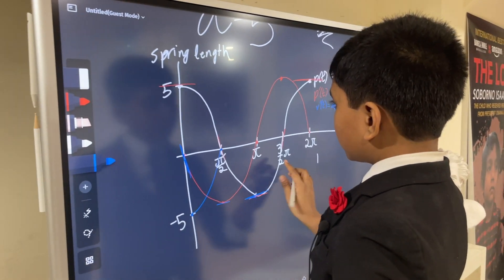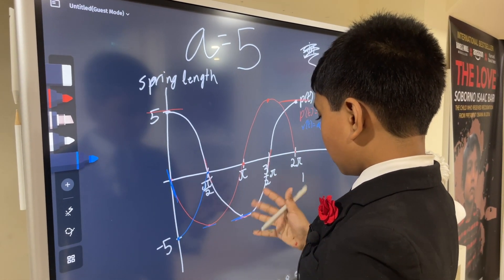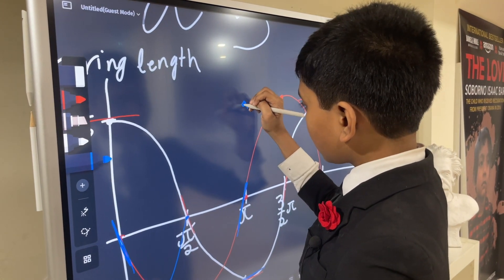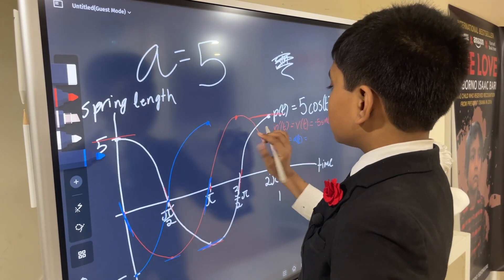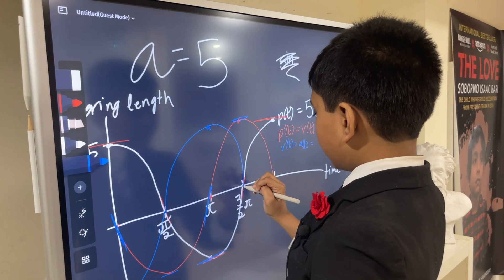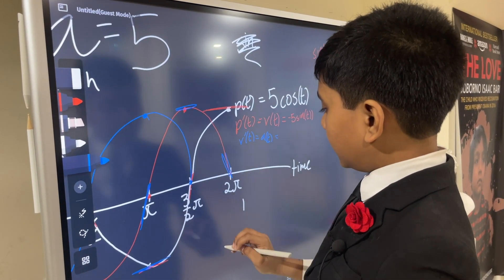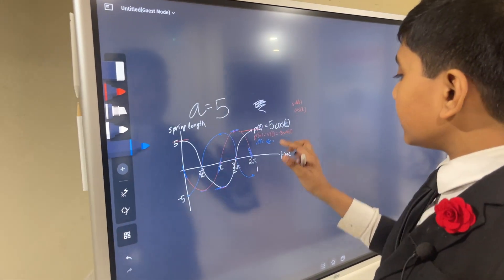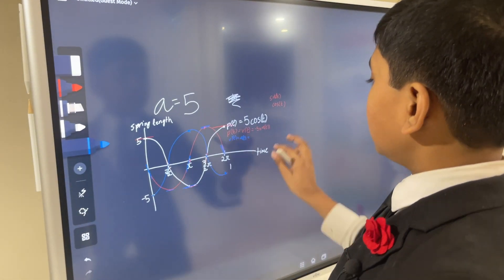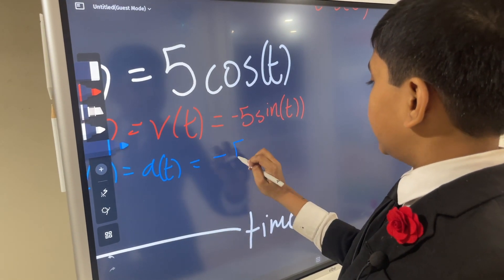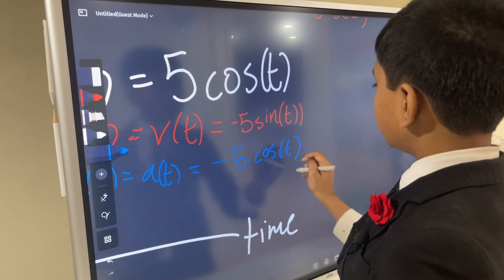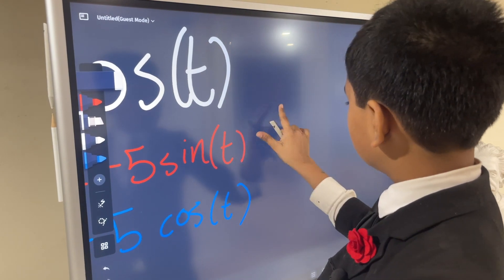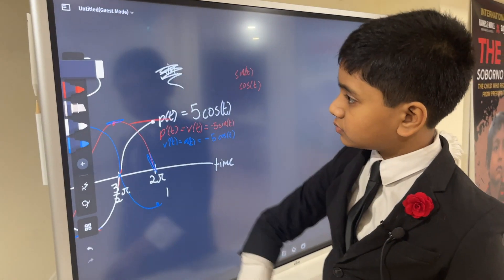We're looking at the velocity graph, whose slope is the max positive over here, so we would draw this. Then the slope of the velocity is zero here, so it goes back down to zero. The slope of velocity is the lowest here, so it goes there. That's acceleration, and you might notice that it's just a flipped version of p of t. So it's minus five cosine t. You can further prove this because the derivative of sine of t is just cosine t.